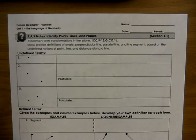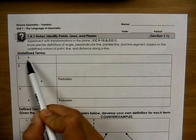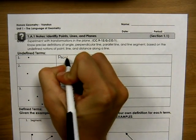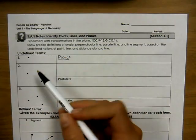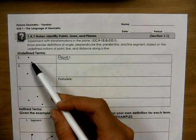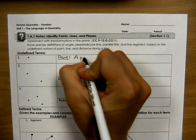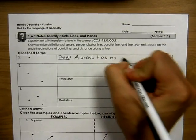All right, so the first undefined term that we're going to discuss is a point. Now, this dot represents a point. The reason why I say this dot represents a point and is not actually a point is because a point has no dimension.